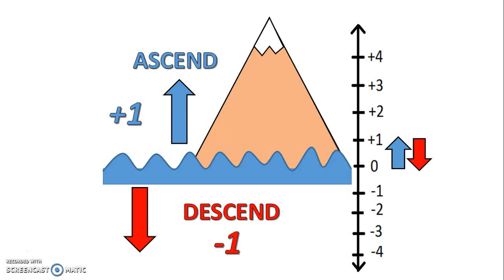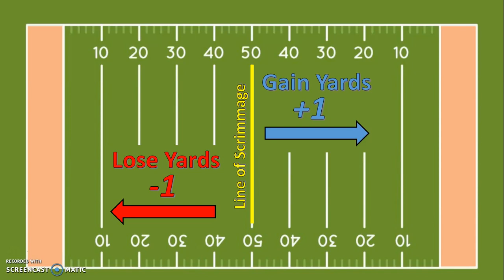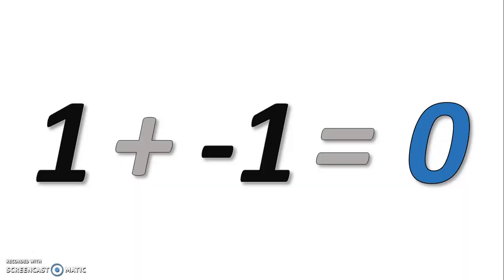And if you were to go below sea level, you'd be in the negative integer values. The final example we'll look at is football. If you carry the ball past the line of scrimmage, that is positive yardage. But if you're tackled behind the line of scrimmage, that is negative yardage. In all these examples, a positive one and a negative one combine to make zero.